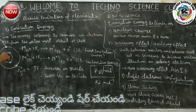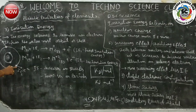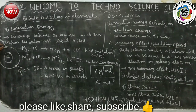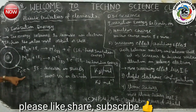Consider an atom: the first shell contains two electrons, and the second shell contains two electrons. The second shell is the outermost shell. When an electron is removed from the outermost shell, the energy required is called first ionization energy. When the second electron is also removed, that energy is called second ionization energy.